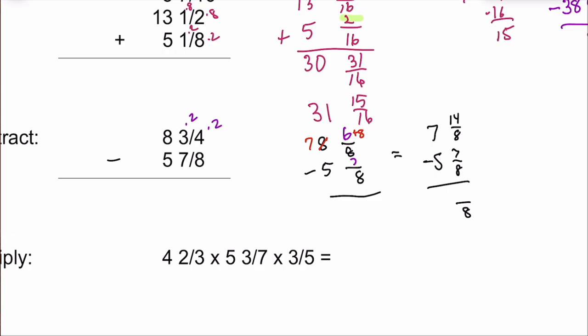And so we get 7 and 14 eighths minus 5 and 7 eighths. We still are going to have eighths in our denominator. 7 minus 5 is 2. 14 minus 7 is 7. And always check, can I reduce anything? You cannot. Your answer is 2 and 7 eighths.